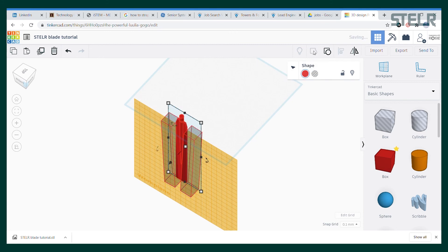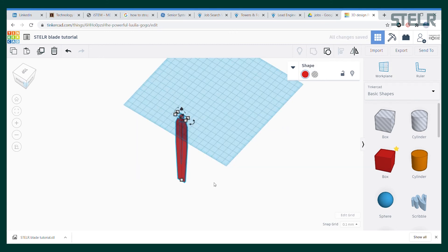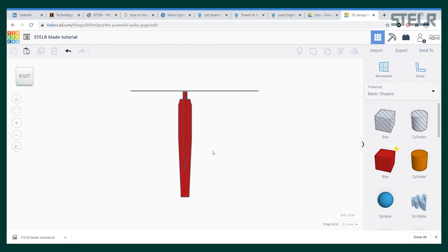Now we have a tapered blade which looks a little bit more like the blades that you'll see on real wind turbines. I wonder if it will make the Stellar wind turbine more efficient.